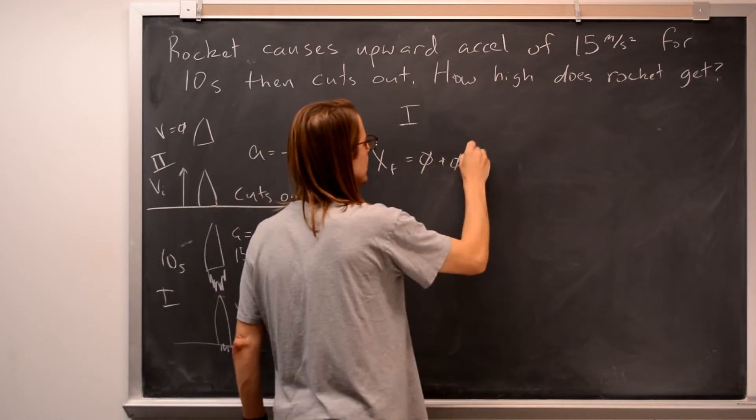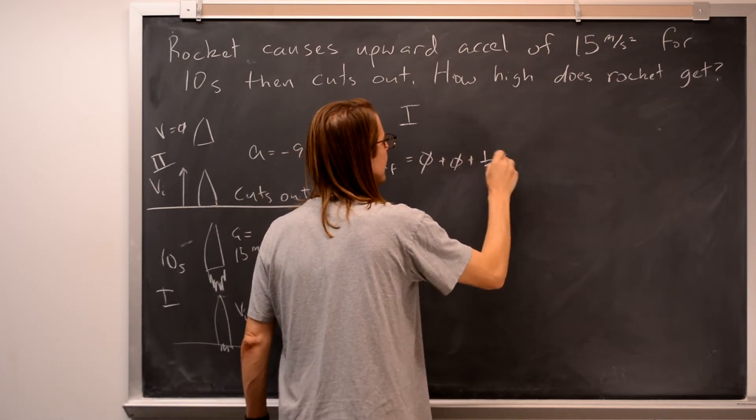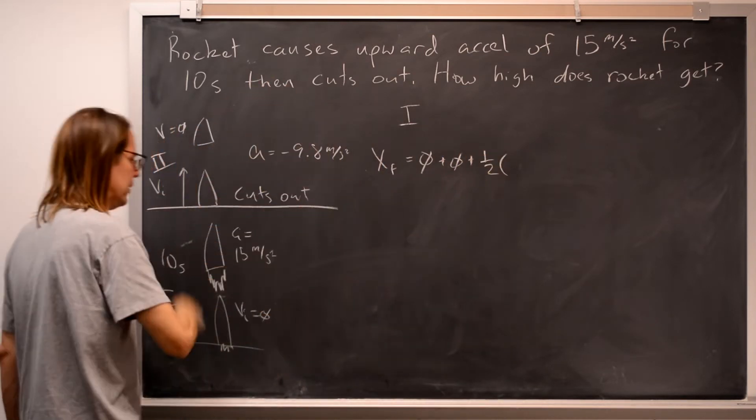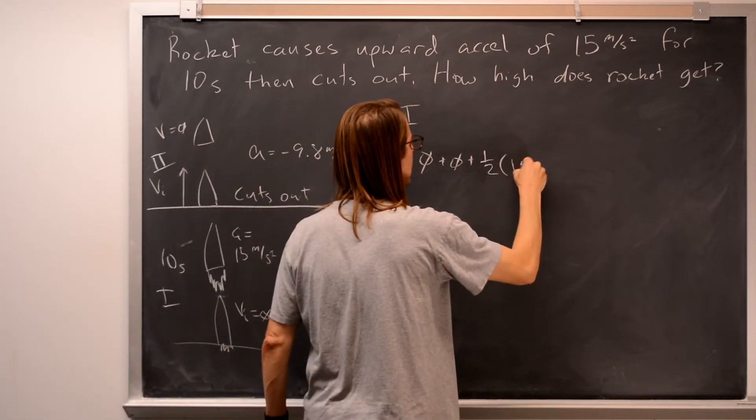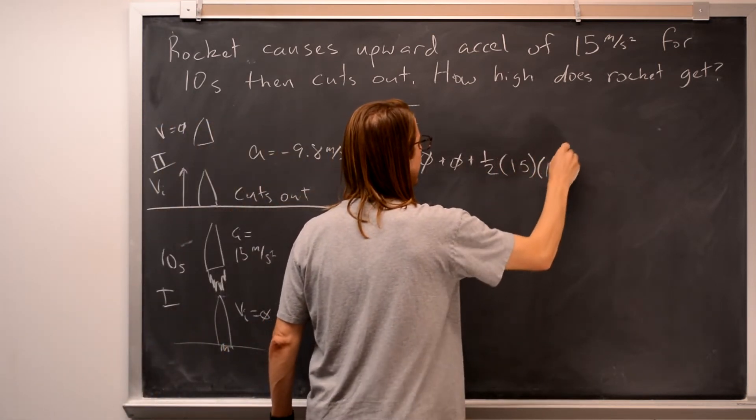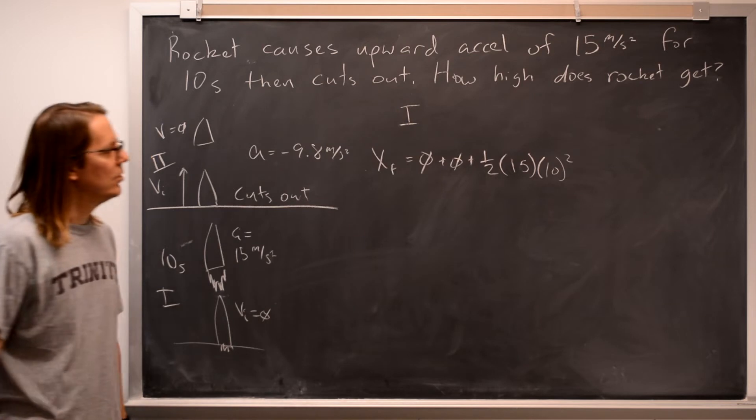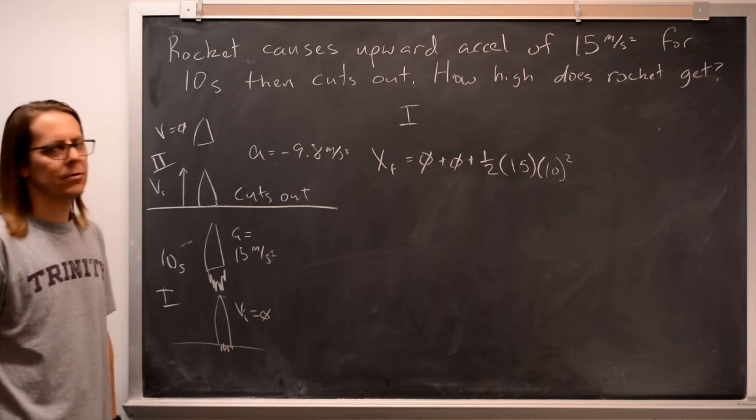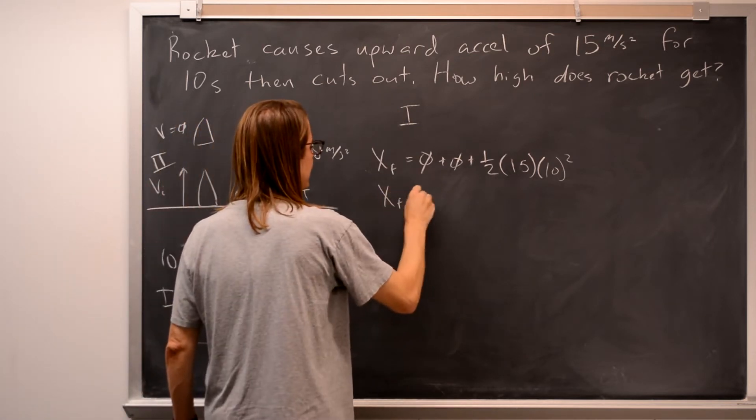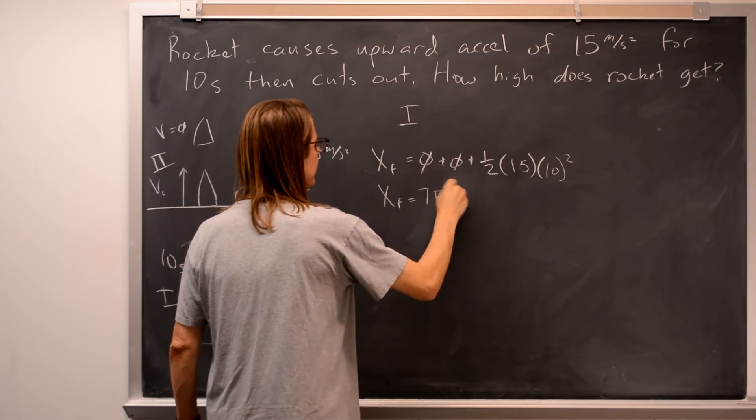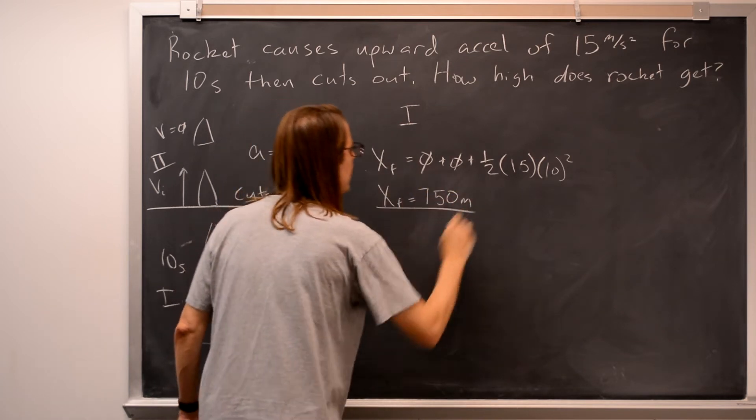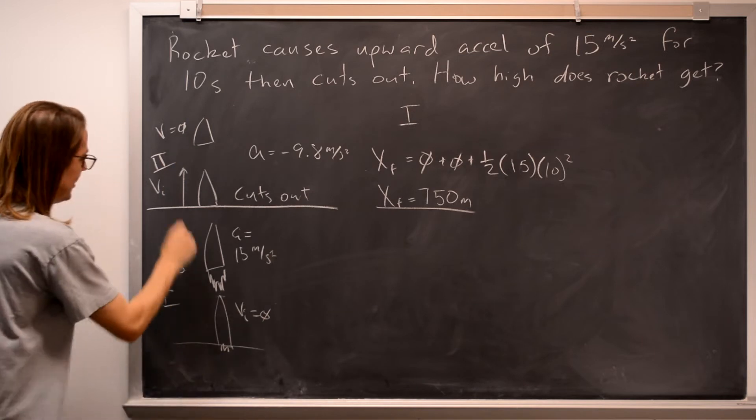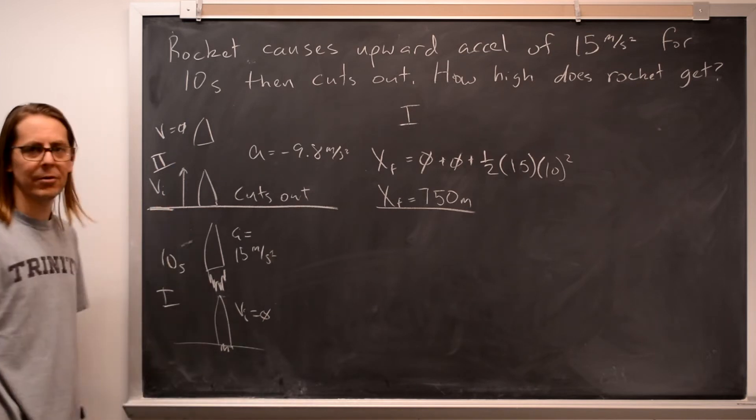So you just say the final position equals the initial position 0 plus the initial velocity times time, but that's 0. The initial velocity plus 1 half A, 15 meters per second squared, times time squared. So 10 squared is 100, 15 hundred divided by 2, we find in this first phase, it gets up to 750 meters. That's not the answer. That's basically here. We've made it to 750 meters.